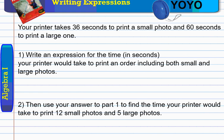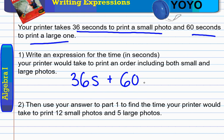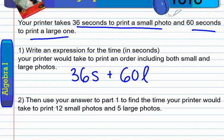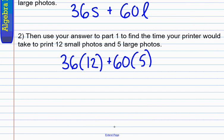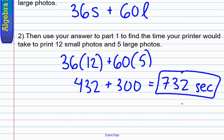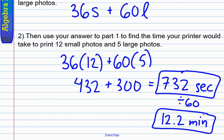Okay, here's how you should think about it. First part it said is it's 36 seconds for a small photo. So, 36 maybe times s for however many small photos there are plus 60 seconds for every large one. So, 60 for every large cursive L. There's my expression. Now, I'm going to use it. 36 times 12 plus 60 times 5. 36 times 12 is going to leave us at 432 plus 300 and that is in total of 732 seconds. That's kind of hard to picture. So, if you divide by 60 because there's 60 seconds in a minute, you'll find that it takes just over 12 minutes to do that order.